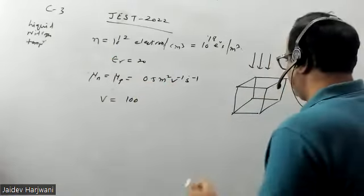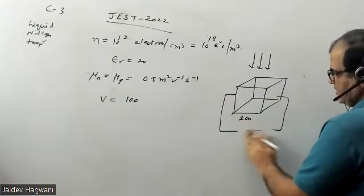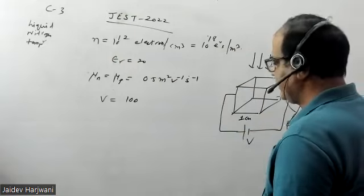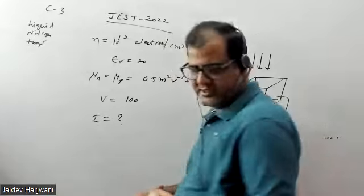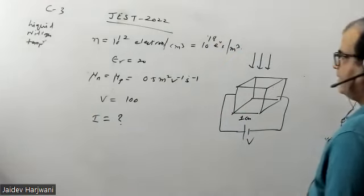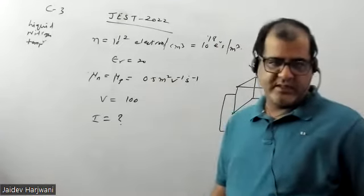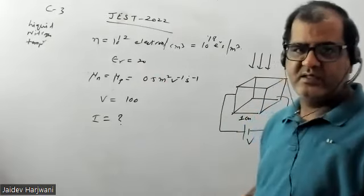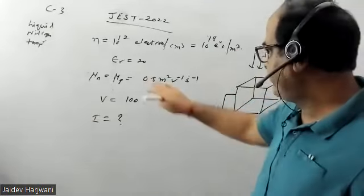They are applying a voltage across this crystal and generating a current. They are asking: what is the value of current flowing across this semiconductor crystal? Now, when we use semiconductor transport equations, we generally don't use the dielectric constant value while calculating electric field or current densities. But in this particular question, since the dielectric constant is given, we have to use it while calculating the electric field.